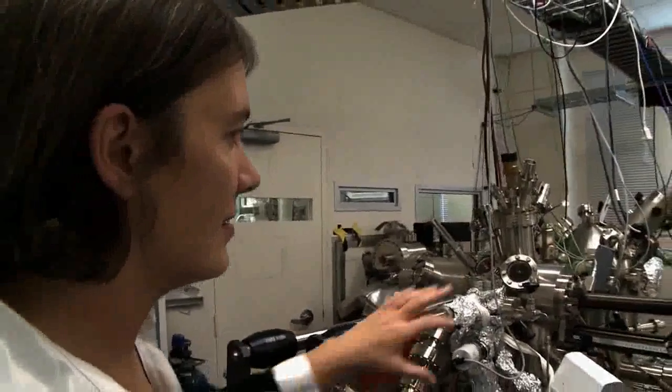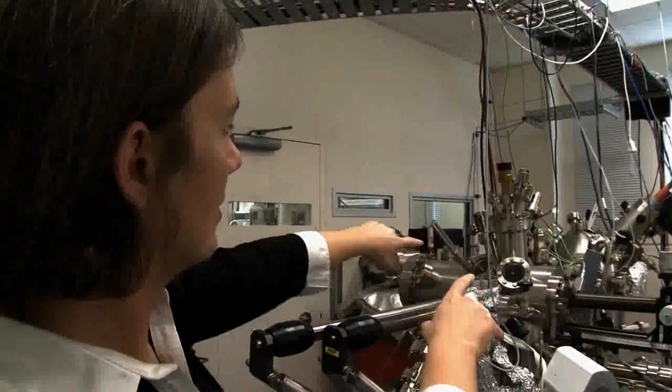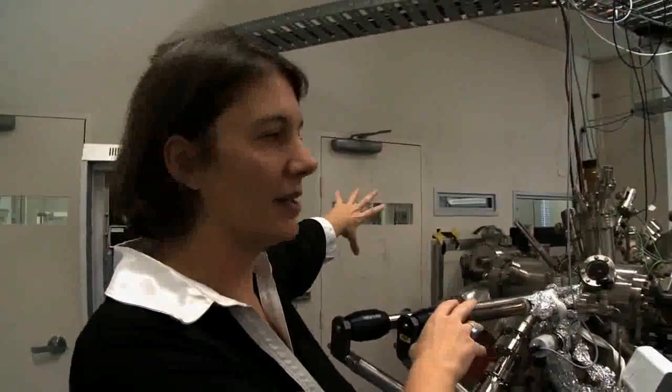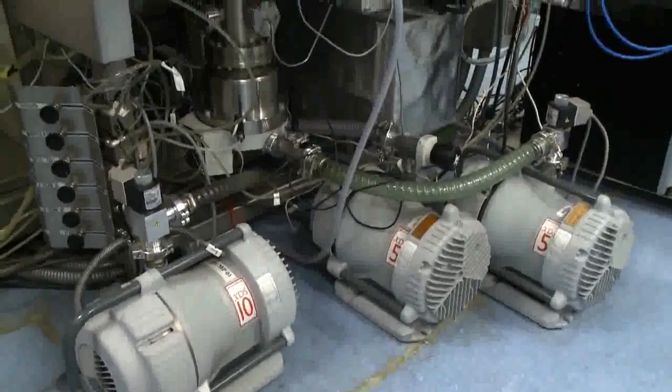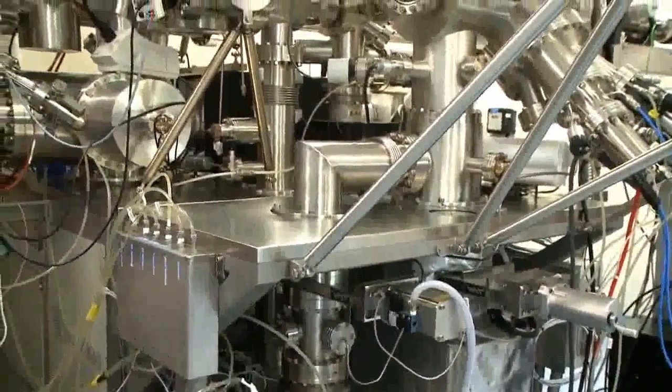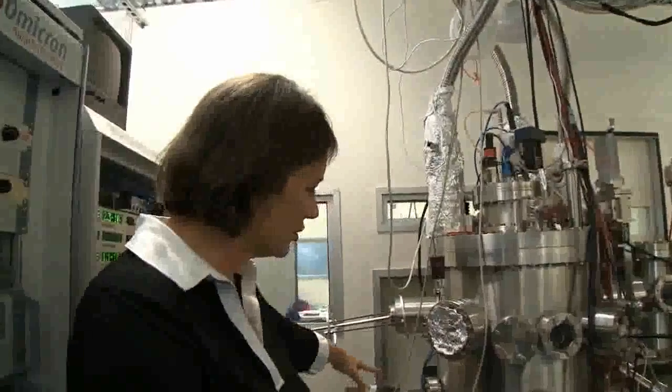So here, this is our scanning tunneling microscope on the right-hand side here. And this is connected under ultra-high vacuum with a piece of stainless steel to a molecular beam epitaxy system. So once we've done the atomic manipulation next door, we bring it through the stainless steel tube to our crystal growth system. And in here, we have sources basically of silicon and germanium, which are basically lumps of silicon and lumps of germanium that are heated up with an electron beam. And they evaporate inside this ultra-high vacuum chamber.